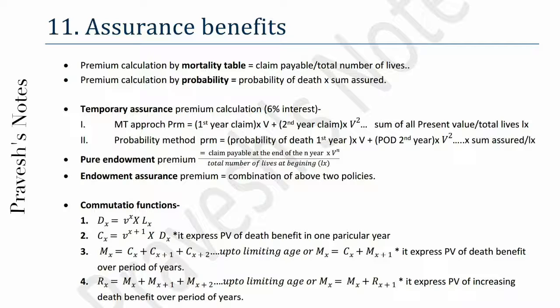Premium calculation by mortality table equals claim payable divided by total number of lives. Premium calculation by probability equals probability of death multiplied by sum assured. Temporary assurance premium calculation at 6% interest: MT approach premium equals first year claim × v plus second year claim × v², with the sum of all present values divided by total lives lx. Probability method: PRM equals probability of death first year × v plus POD second year × v² × sum assured, divided by lx.